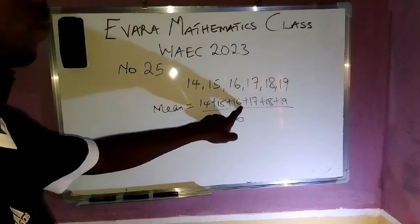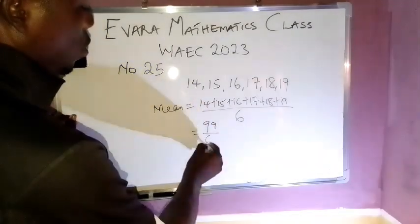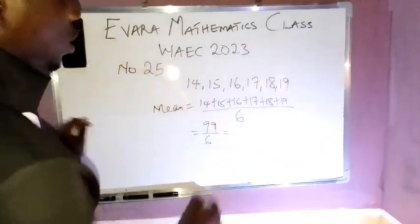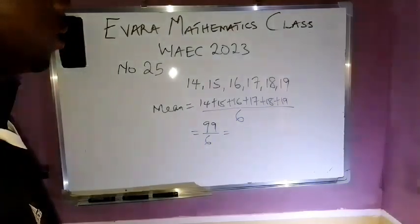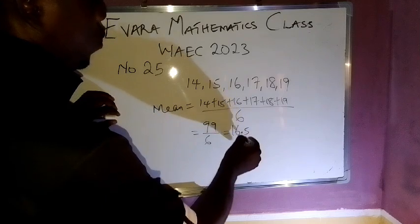Now if you add up all the numbers you have 99 over 6. So 99 divided by 6, that gives 16.5.